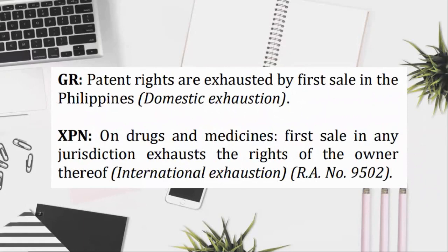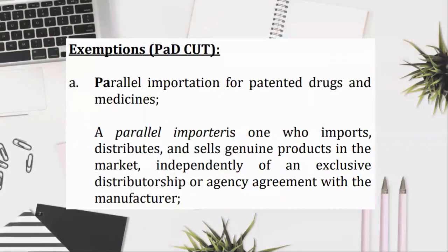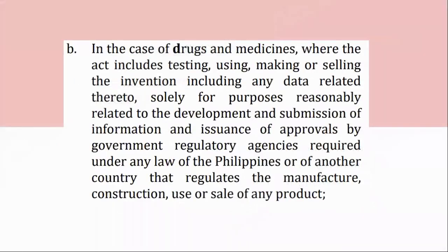Patent infringement — civil infringement: making, using, offering for sale, selling, or importing a patented product or a product obtained directly or indirectly from a patented process, or the use of a patented process without the authorization of a patentee constitutes patent infringement. Exemptions (PADCUT): (A) parallel importation for patented drugs and medicines — a parallel importer is one who imports, distributes, and sells genuine products in the market, independently of an exclusive distributorship or agency agreement with a manufacturer; (B) in the case of drugs and medicines, where the act includes testing, using, making or selling the invention including any data related thereto, solely for purposes reasonably related to the development and submission of information and issuance of approvals by government regulatory agencies required under any law of the Philippines or of another country; (C) compulsory licensing; (D) use of invention by government; (E) procedures on issuance of a special compulsory license under the TRIPS agreement for patented drugs and medicines.